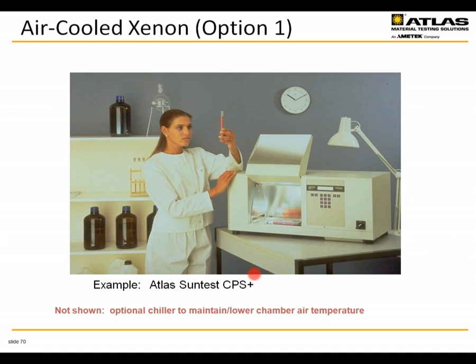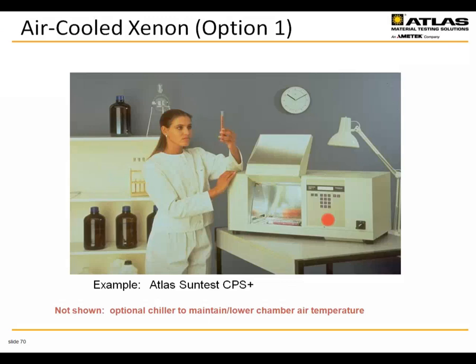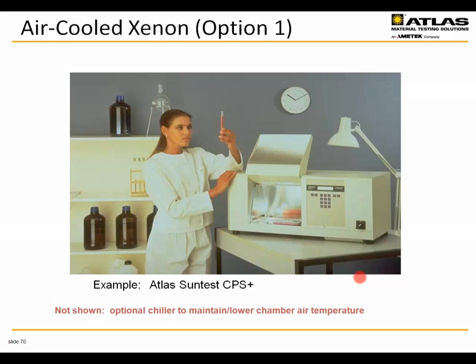An example device is the Atlas SunTest CPS Plus. The light source is located in the ceiling of the device along with appropriate D65 or ID65 filters. Test specimens are placed on a sample tray, and various reflectors and optical systems provide high spatial uniformity over the exposure area. The controls are computer controlled so you can set the light intensity and duration of exposure for unattended operation. There is also an optional chiller attachment for thermally labile samples to maintain a lower test temperature.